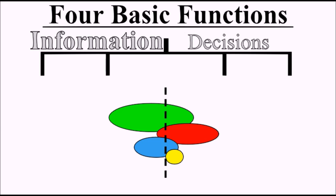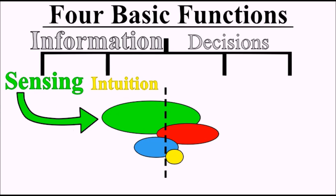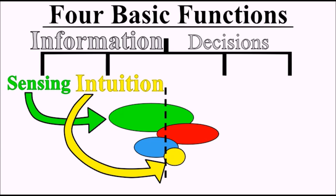The information processing functions are sensing and intuition. Sensing is scanning the environment and taking in the data through the senses, the things we can see, touch, hear, etc. Intuition takes it a step further by interpreting or adding meaning. This is what we often describe as reading between the lines or having a gut feeling.